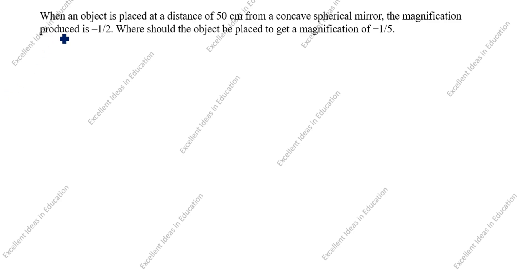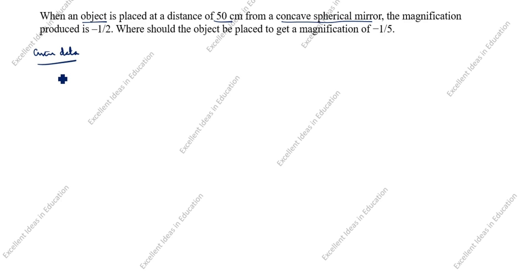This is a very important problem. When an object is placed at a distance of 50 centimeters from a concave spherical mirror — concave mirror is the same — the given data is u is equal to minus 50 centimeter. The magnification produced is minus 1 by 2, so m is equal to minus 1 by 2. Since minus is given, this image is real.